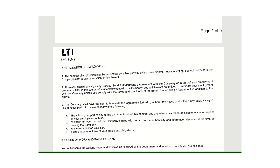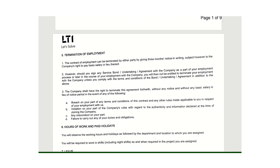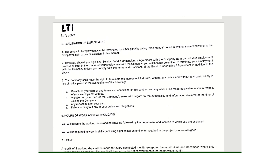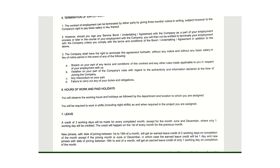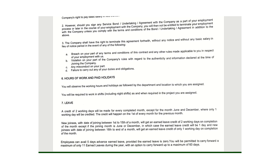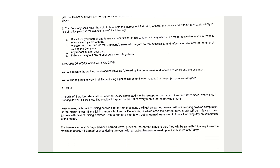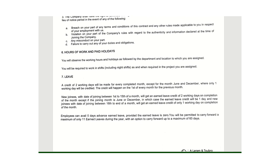The fifth point covers the termination of employment — in which cases the company will terminate you and what the conditions will be. The notice period is the same as per other company guidelines: 30 to 90 days. If you are on probation, it is 30 days. The conditions on which grounds the company will terminate you are mentioned, and night shifts are also included. The company can also change your location as per business requirements.